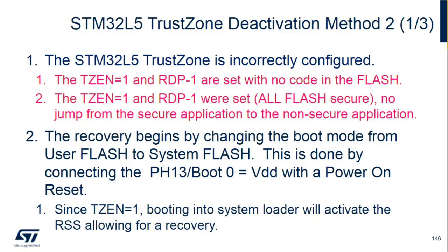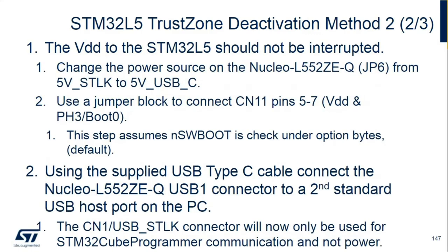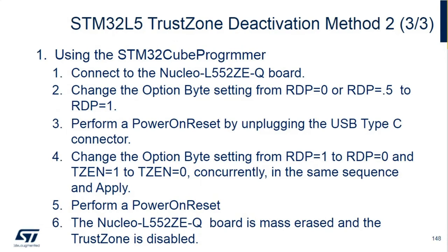If the TrustZone is enabled, it will not only invoke the loader but also invoke the RSS, and that's how we recover from what we think is non-recoverable. On the Nucleo board, on the four corners on the bottom side, there are Berg jumpers on some ground pins. You would take one of those jumpers off and connect PH13 boot zero to VDD — they're both side by side. This boots into the RSS and allows the option bytes to be released, then you can do what we're going to do for method one and revert it back, changing the TrustZone enable bit at the same time.